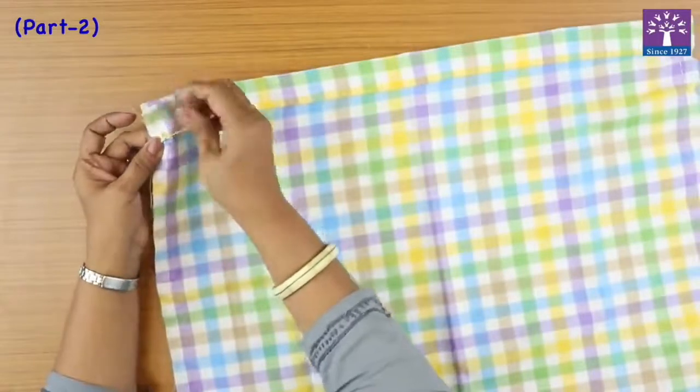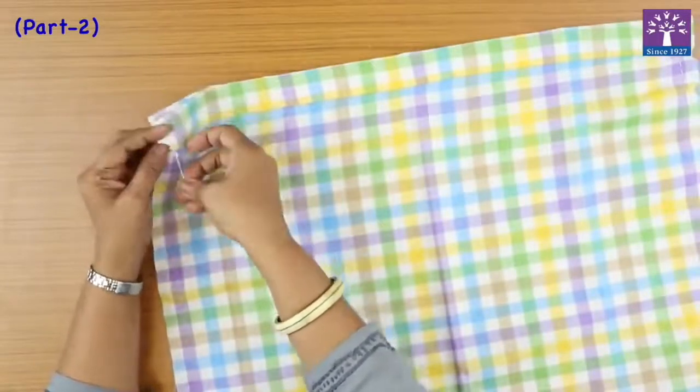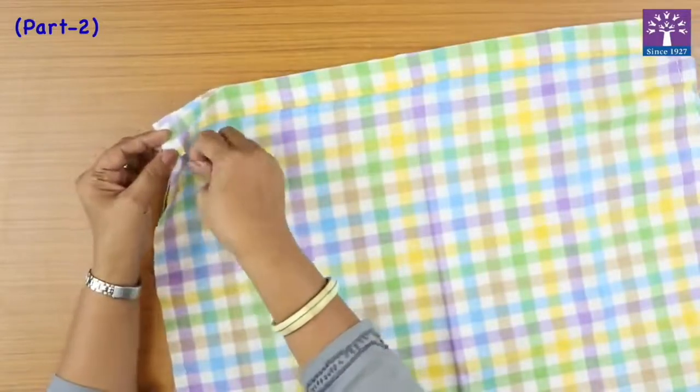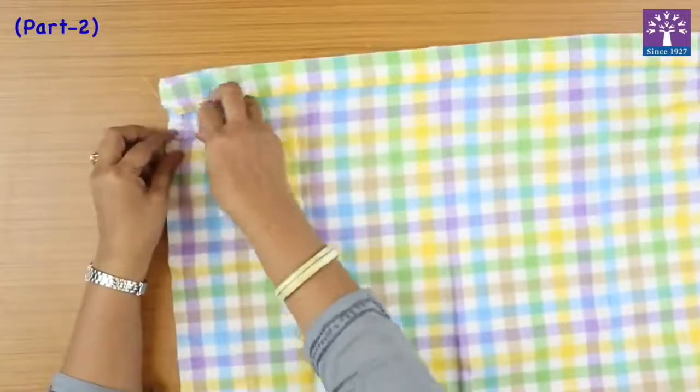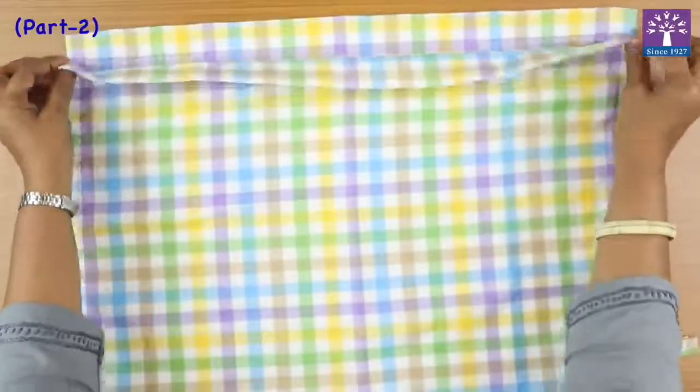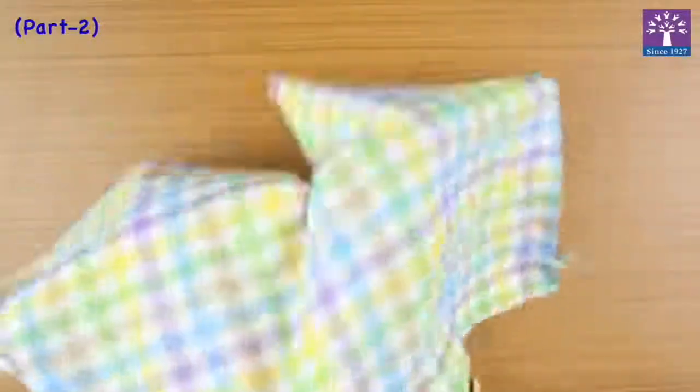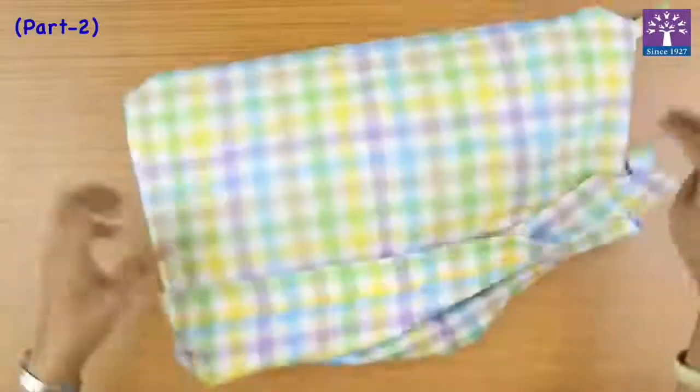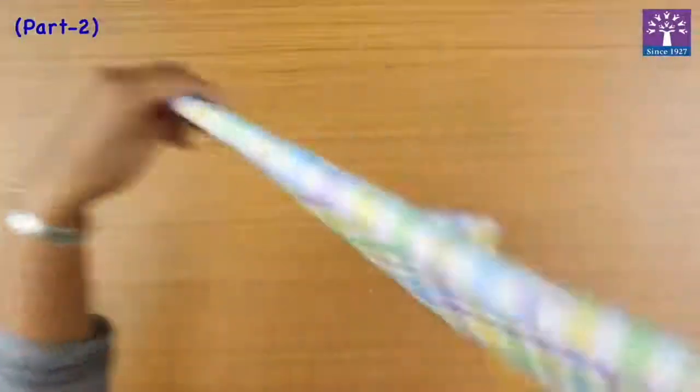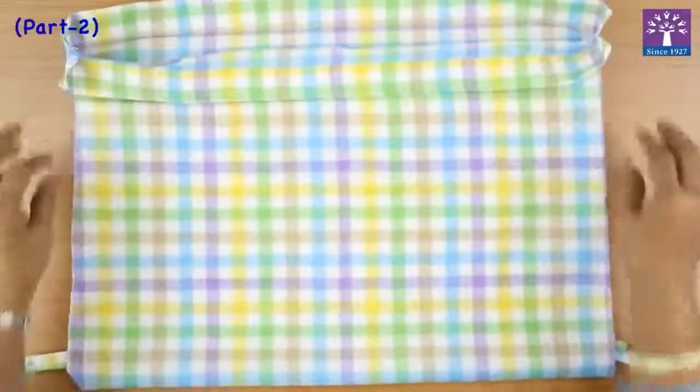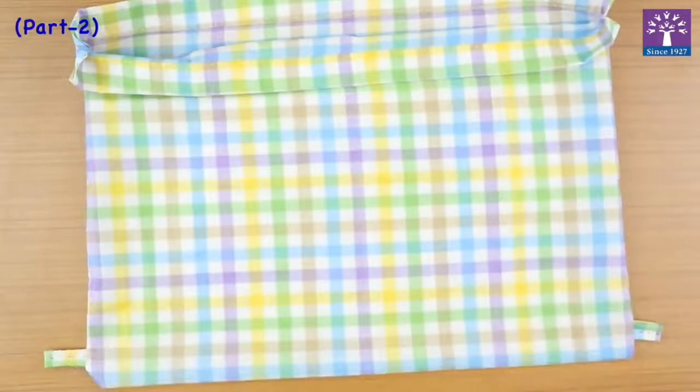Tie a knot, stitching only till here. This is still open. Now we will turn the bag inside out. So this is the right side of our bag. Here these were the two loops or strips that we had stitched, and this is our bag. We've turned it inside out. Now we will take a thick cord.